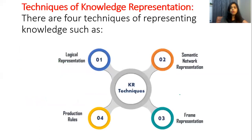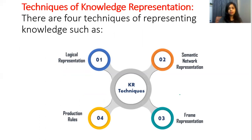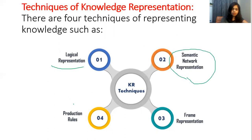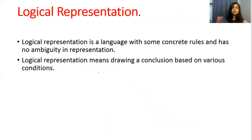There are different techniques of knowledge representation — that is, different techniques of entering data, information, and knowledge into the machine. The four techniques are: logical representation, semantic representation, rules, and frames. What is logical representation? Logical representation is a language with some concrete rules and has no ambiguity in representation.